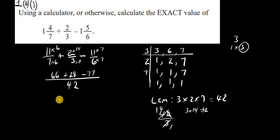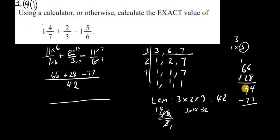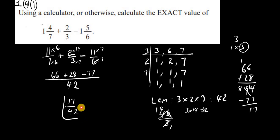Now we add 66 plus 28, which gives us 94. Then we subtract 77. 7 from 4 we can't, so we borrow 1 from the 9, leaving 8. The borrowed 1 makes it 14 minus 7, which is 7. And 8 minus 7 is 1. So we're left with 17, giving us 17 over 42, and that's our solution.